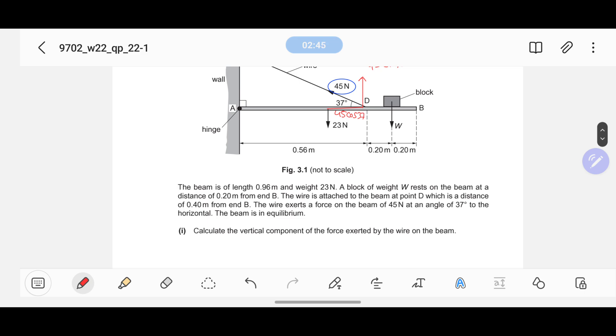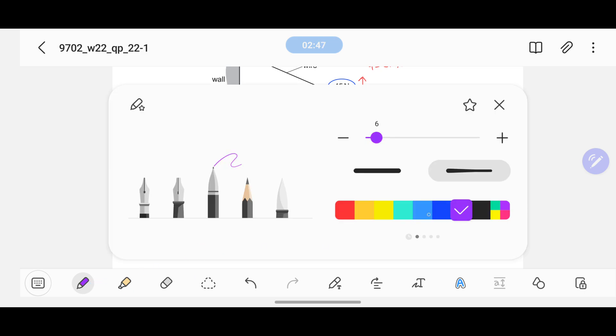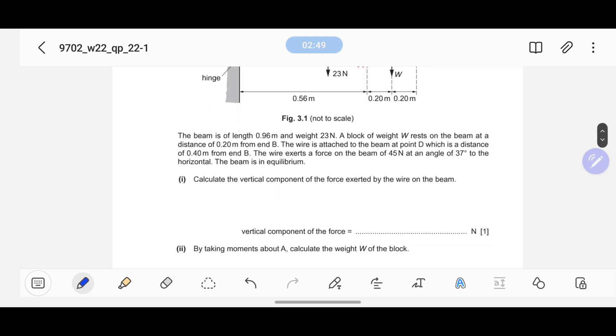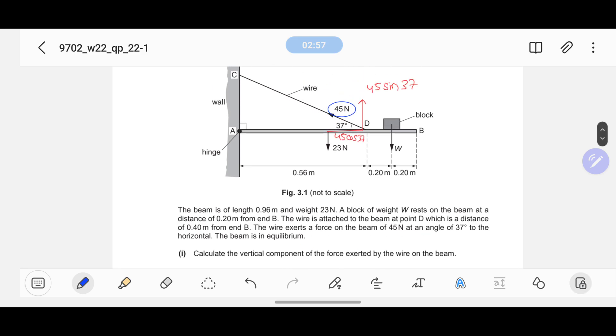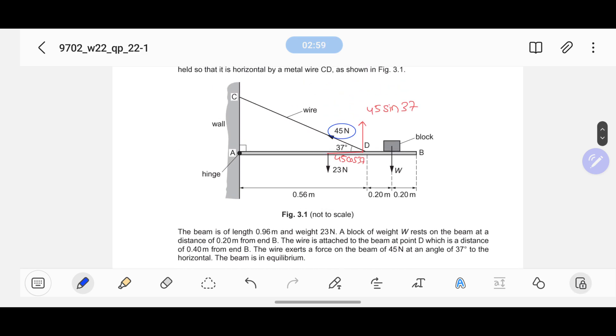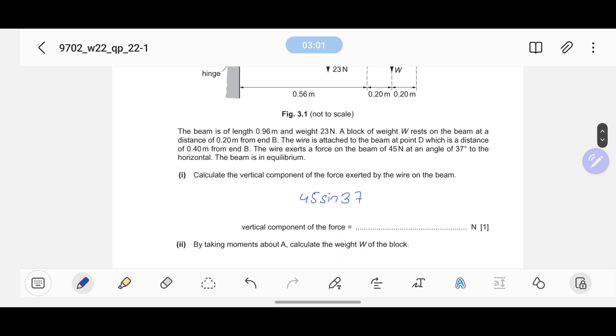We have already found this one earlier, so we just need to simply calculate the value: 45 sin 37. The value is 27.08 Newton. I can round it off to 27 - two significant figures are enough.